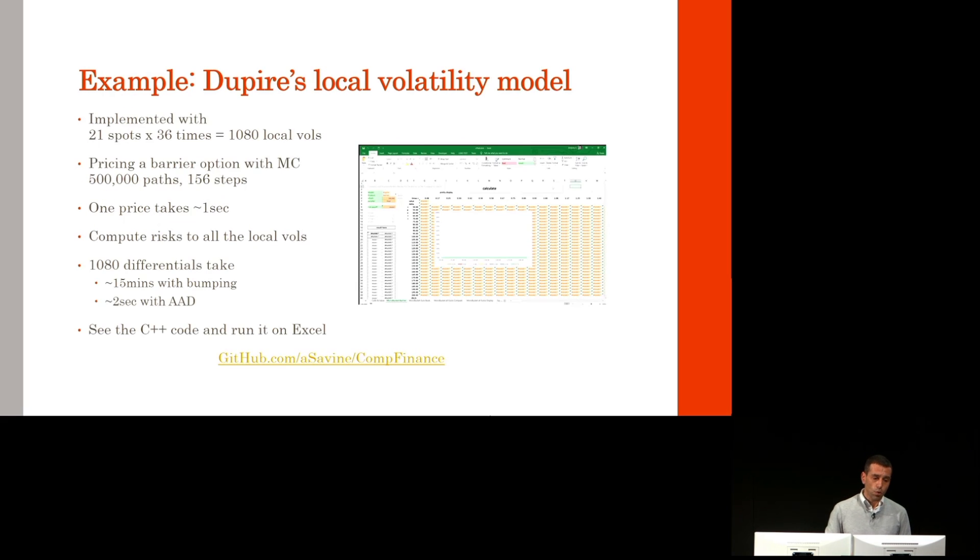As an example, consider Dupire's local volatility model implemented with 1,000 local vols. Pricing a barrier option with Monte Carlo, half a million paths, 150 steps. One price takes around a second.